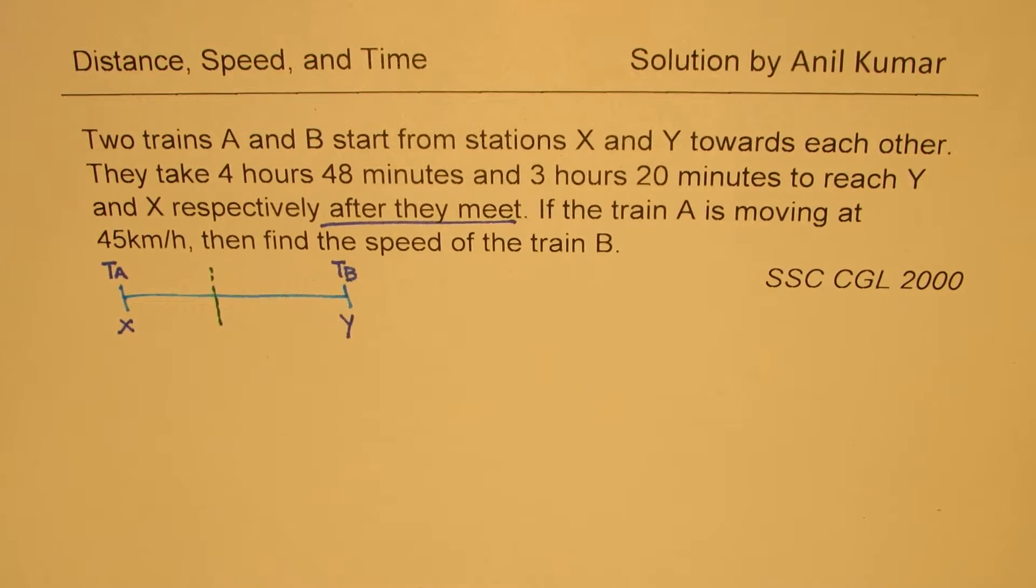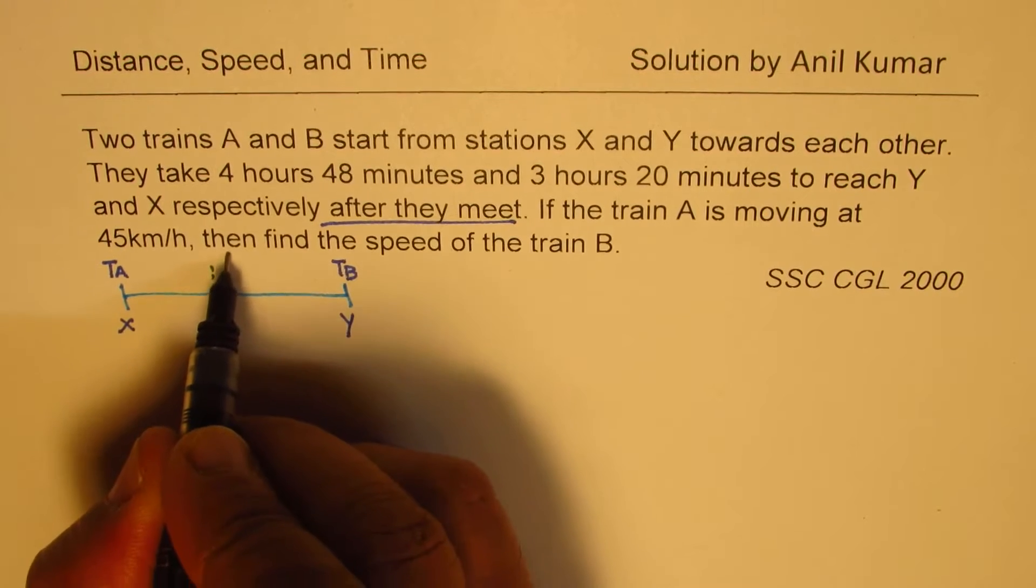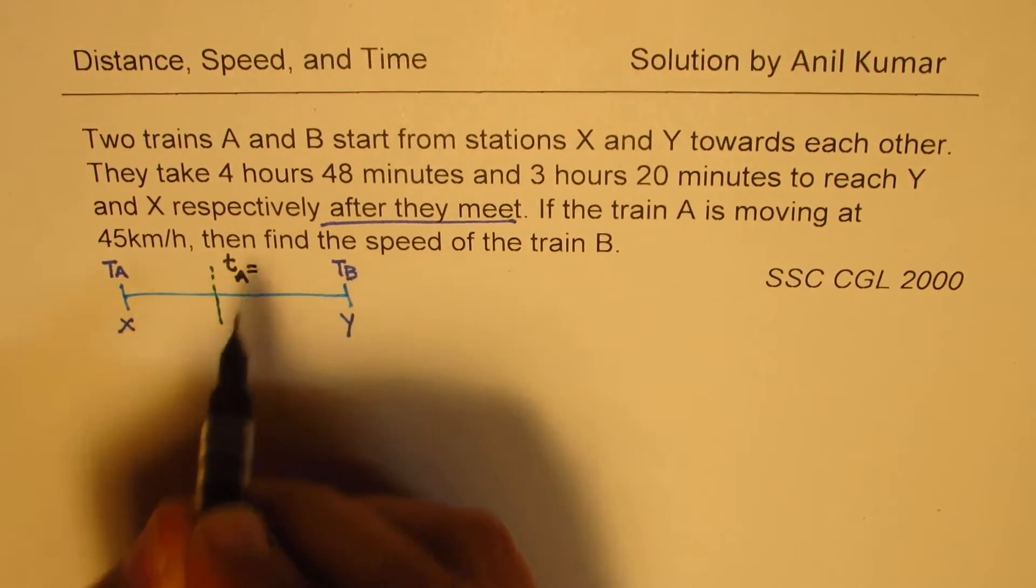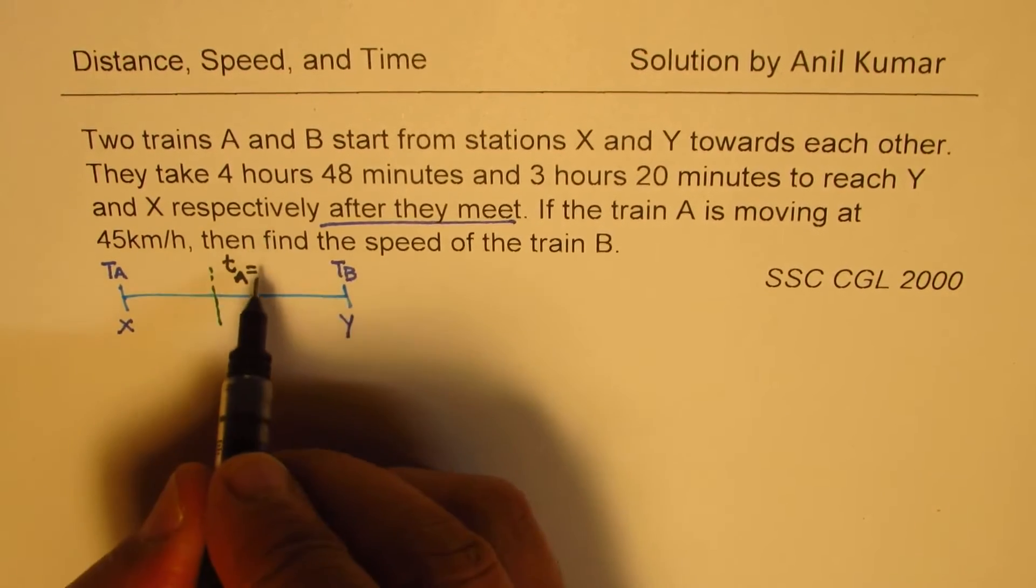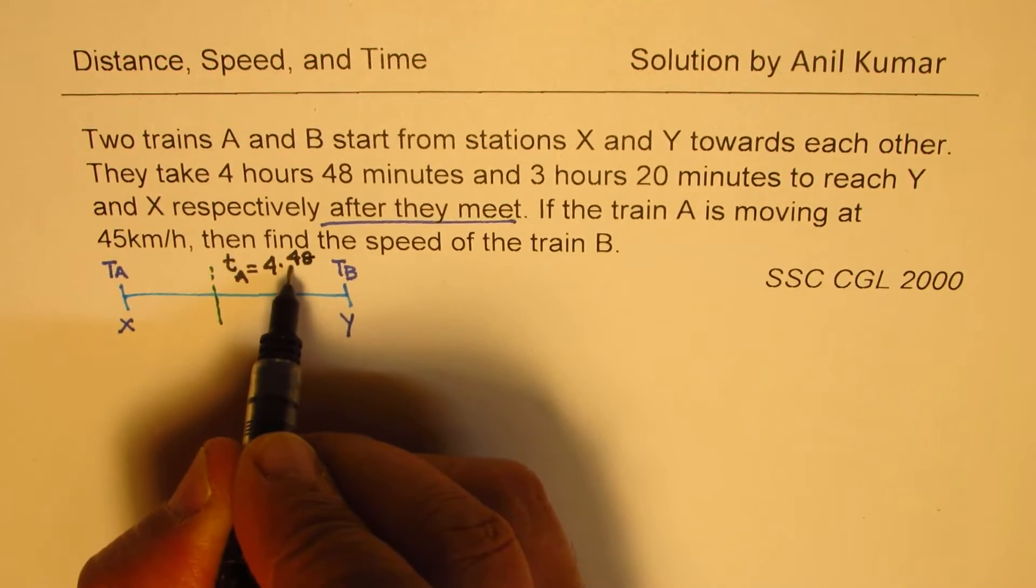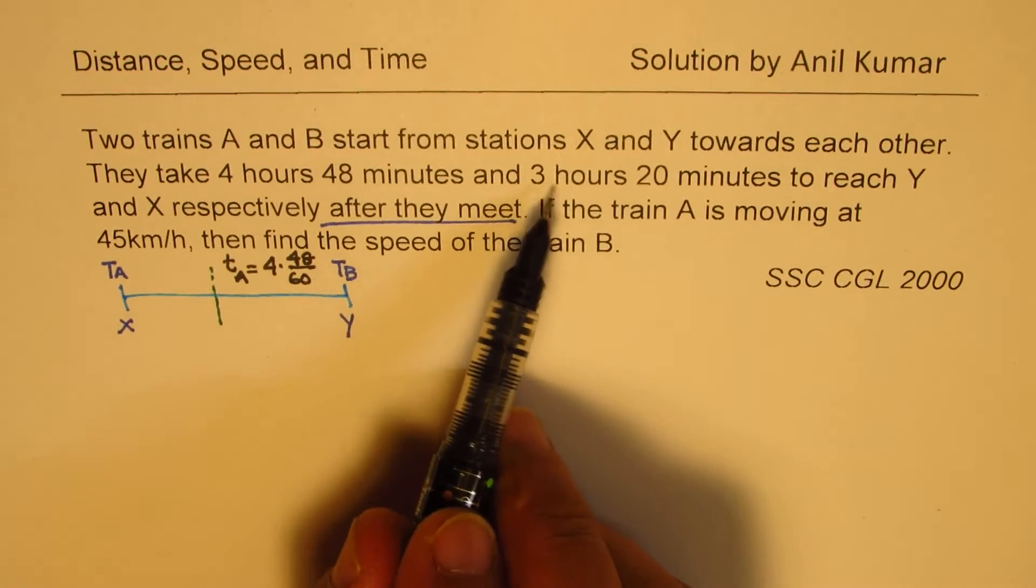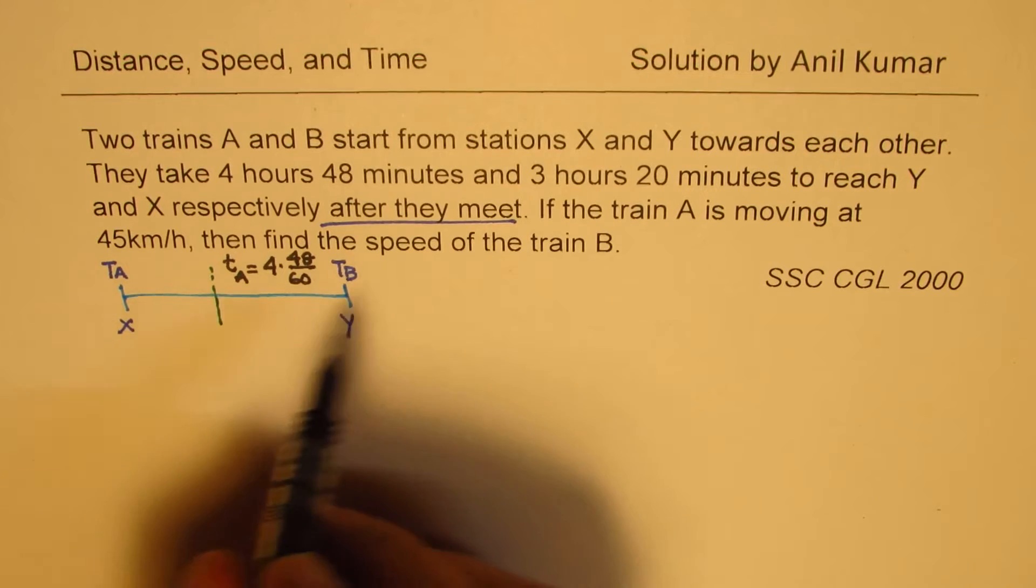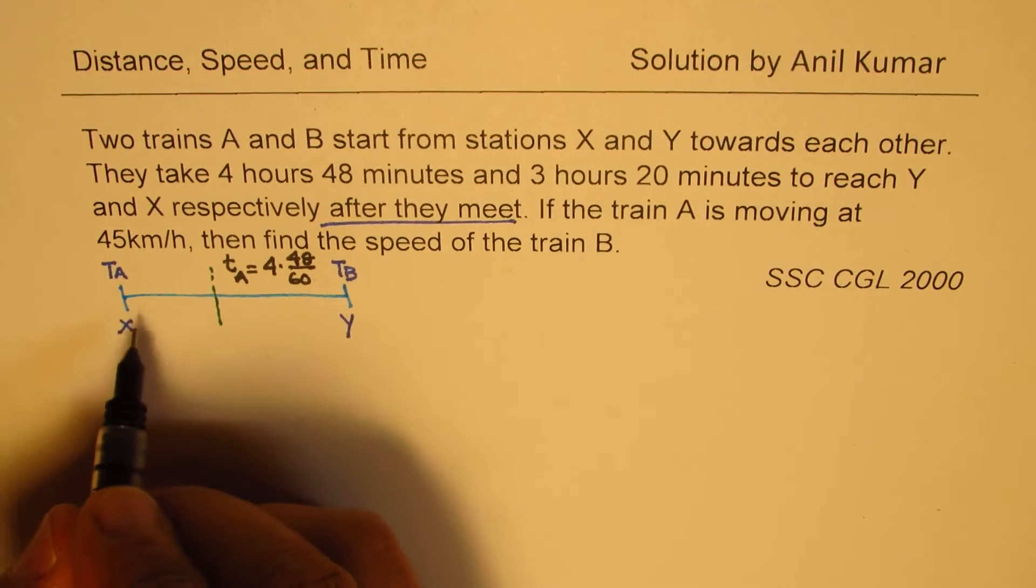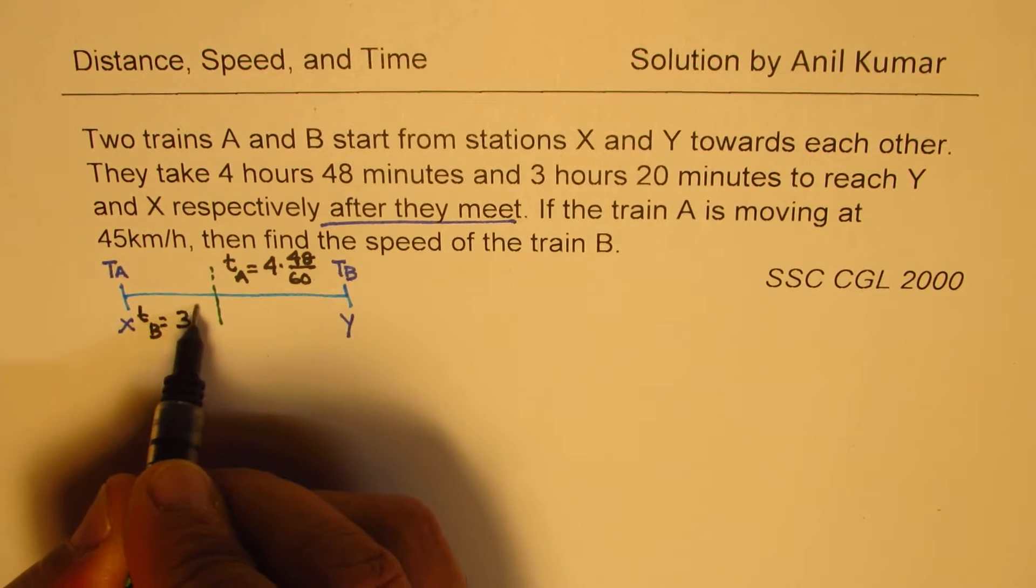After this time, time taken by A is 4 hours 48 minutes, which is 4 plus 48 over 60. We'll simplify later. And 3 hours 20 minutes for the other train. So this is to reach Y, that is to reach X. So this time here is 3 hours 20 minutes, which is 20 over 60 hours.